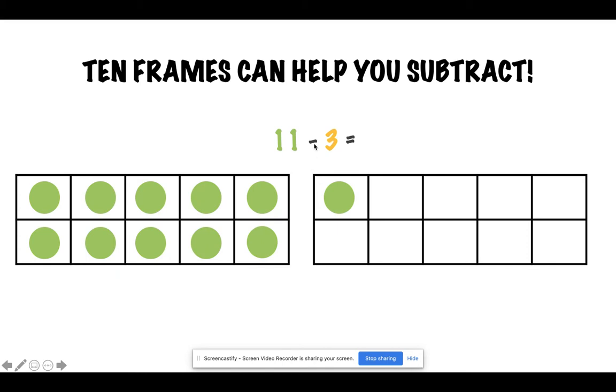The minus sign is telling me to subtract. It's telling me to take away 3. So I will take away 3: 1, 2, 3. To show that I am taking away, I have marked my counters with an X. Now I am going to count the counters that do not have an X, and that will be my difference.